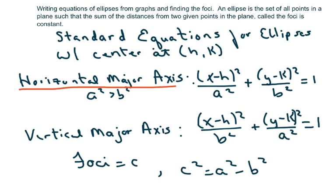An ellipse is the set of all points in a plane such that the sum of the distances from any two given points in a plane, called the foci, is a constant.